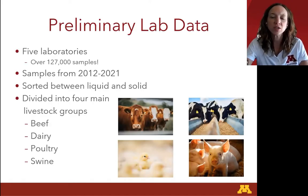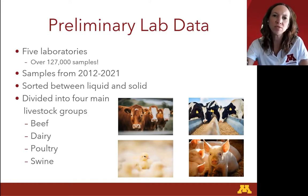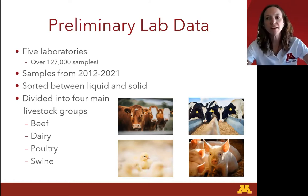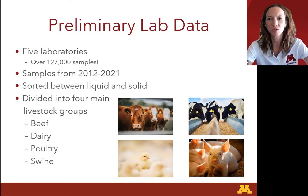In this project we partnered with five laboratories and received over 127,000 manure nutrient samples. They came from between 2012 and 2021, so within the last 10 years. We were able to divide this data between liquid and solid samples, and then divide into four main animal groups: beef, dairy, poultry, and swine.